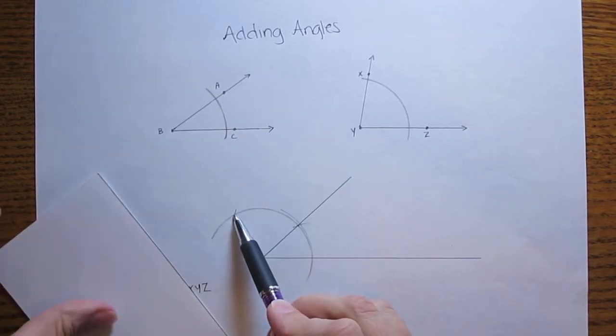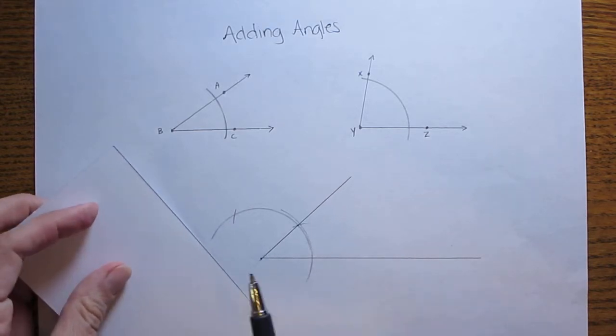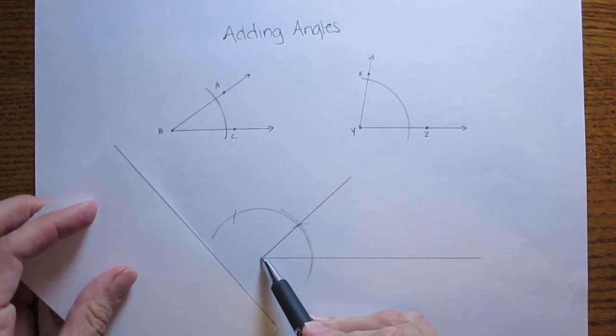Now where those two arcs intersect I will connect that using my straight edge. Connect that to the vertex.